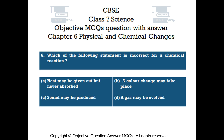Question number 6. Which of the following statement is incorrect for a chemical reaction? Option A: Heat may be given out but never absorbed. Option B: A color change may take place. Option C: Sound may be produced. Option D: A gas may be evolved.